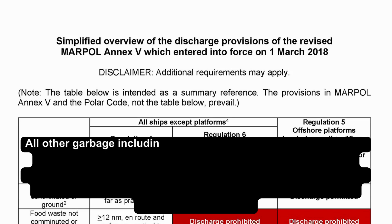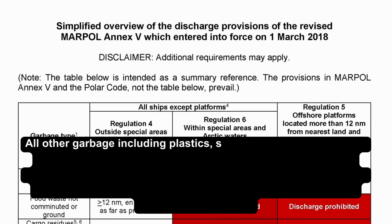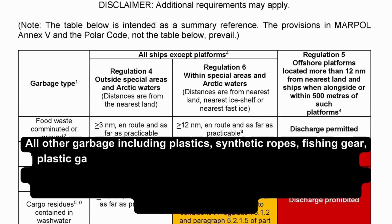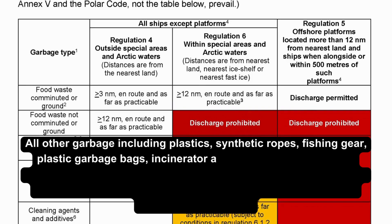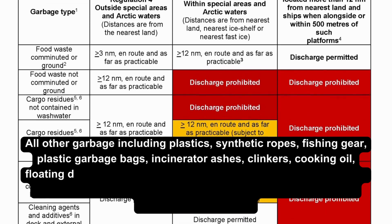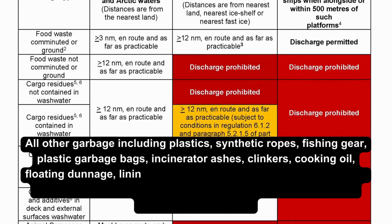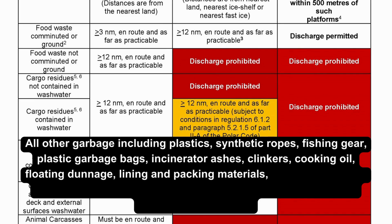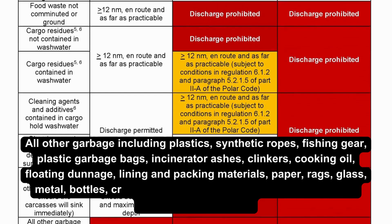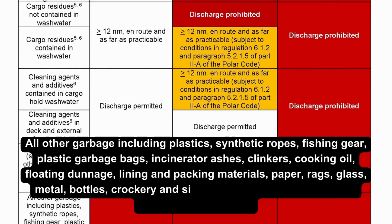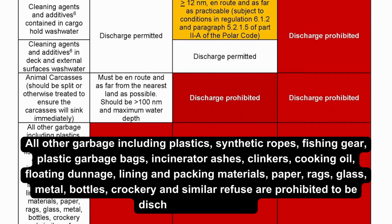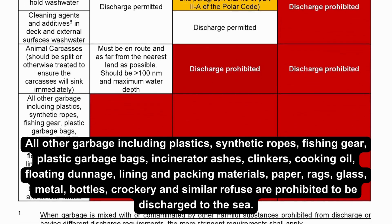All other garbage, including plastics, synthetic ropes, fishing gear, plastic garbage bags, incinerator ashes, clinkers, cooking oil, floating dunnage, lining and packing materials, paper, rags, glass, metal, bottles, crockery, and similar refuse, are prohibited from being discharged into the sea.